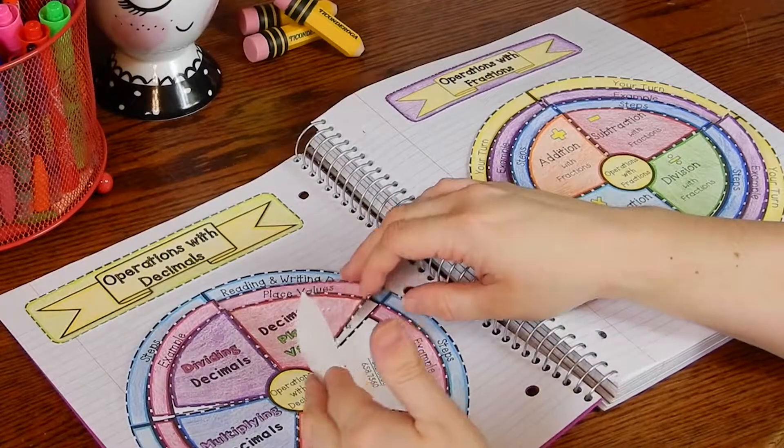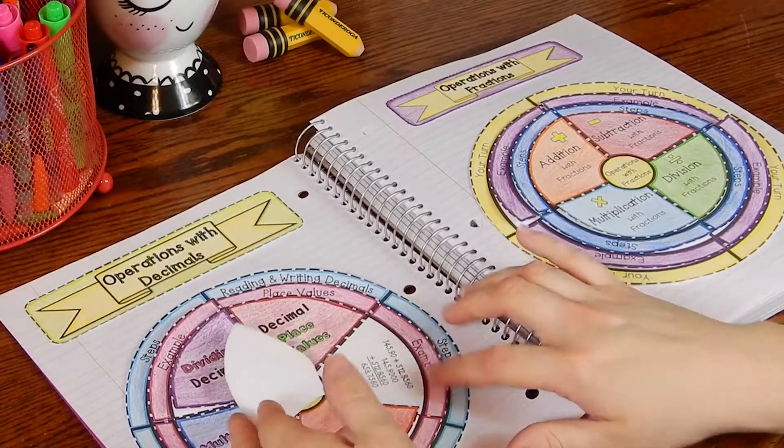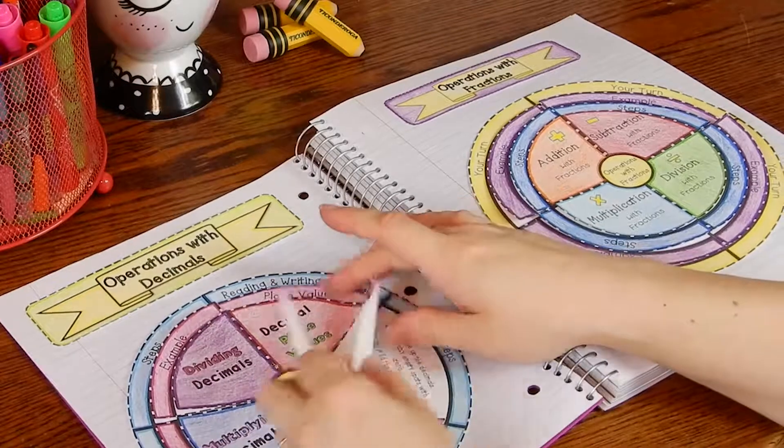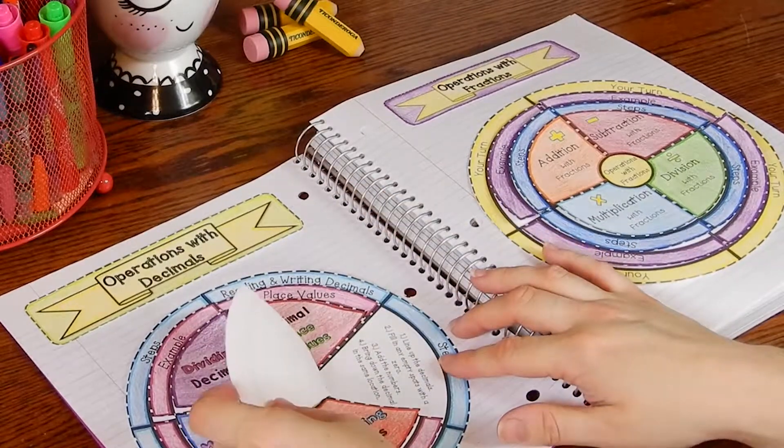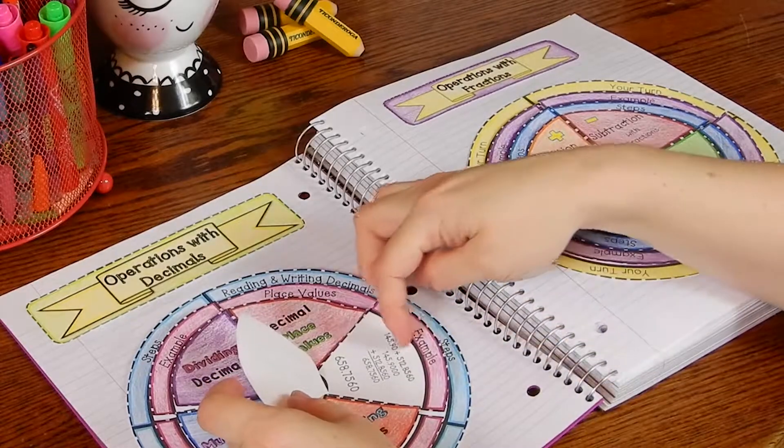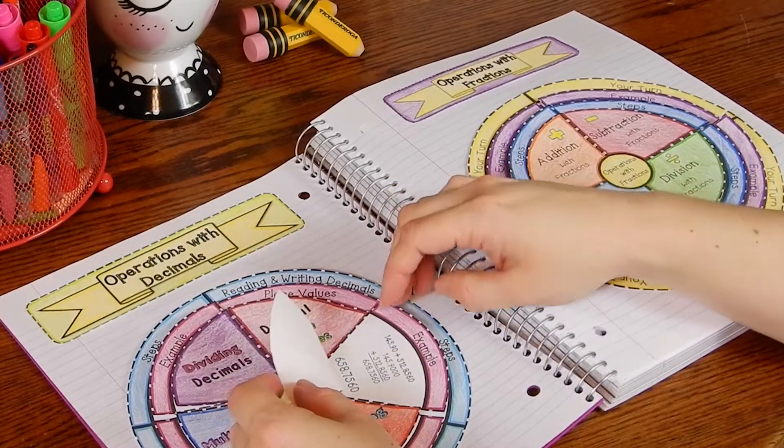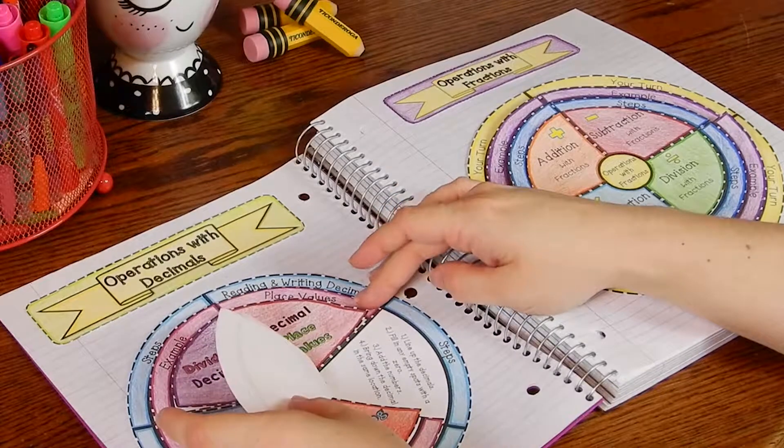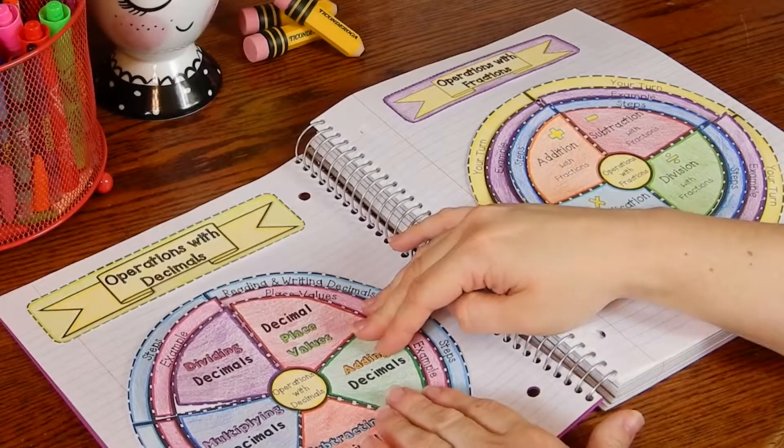When they place them together, you can have it to where it already has an example and the steps printed, or you can print a blank one and have students solve the example and then fill out the steps as well. So that is up to you.